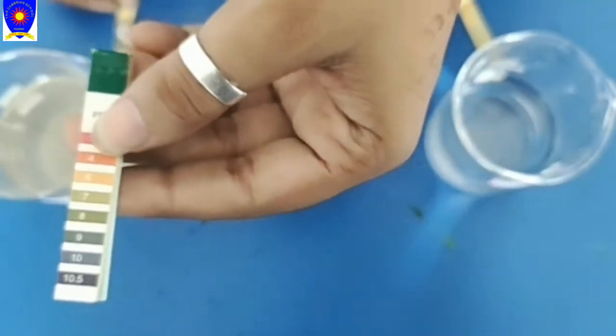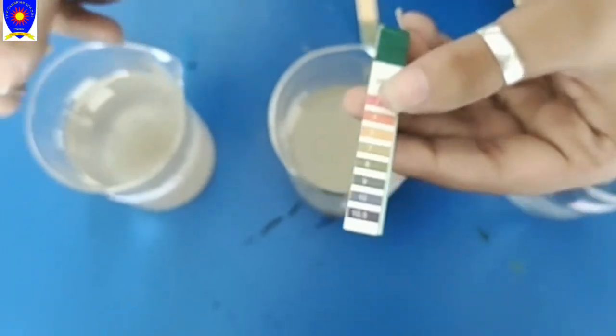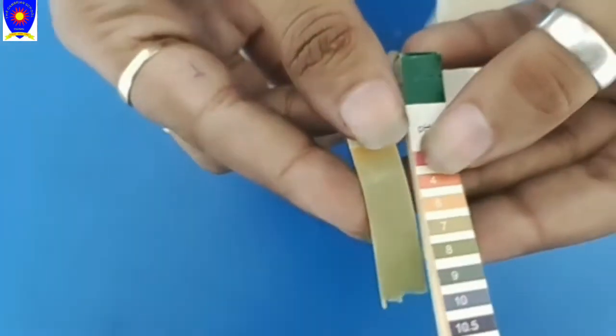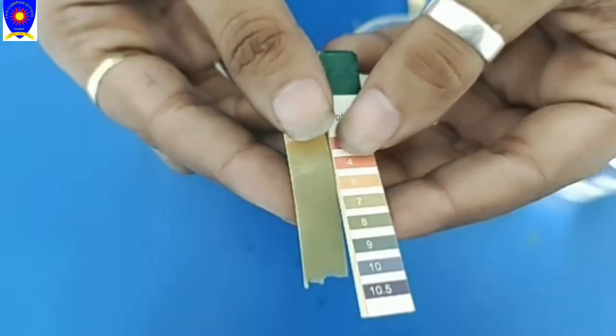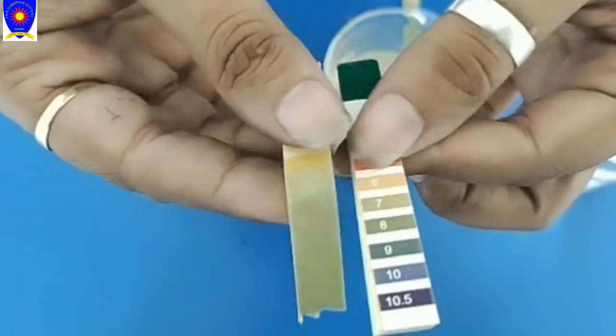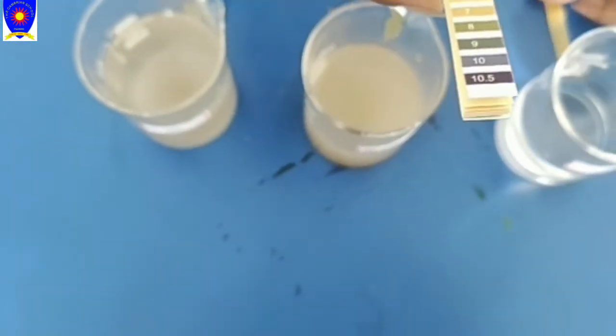And the third water sample that is basically tap water, the pH of the tap water is 7 again. The pH strip has not changed properly, a little bit of changes are there, so it's 7, and the second one we saw was 8, and the other one is neutral.